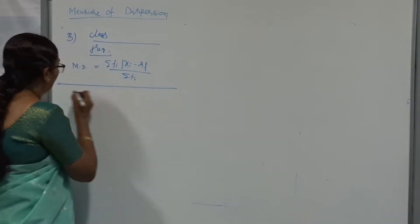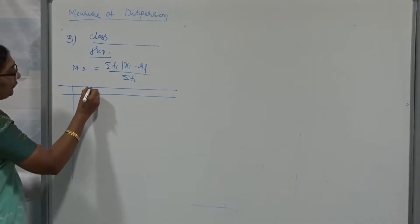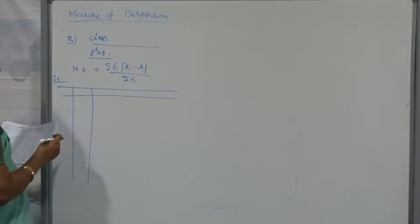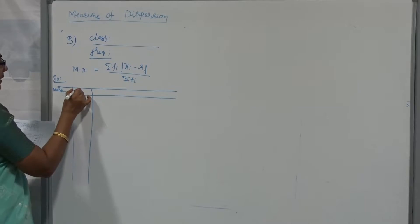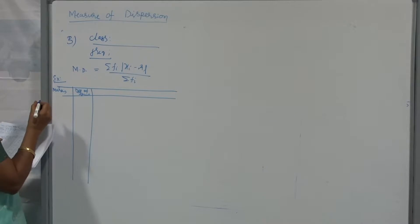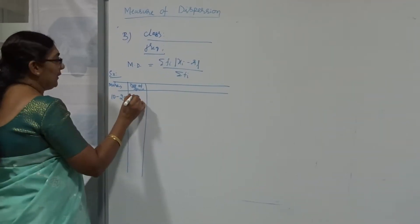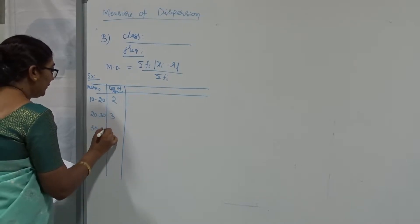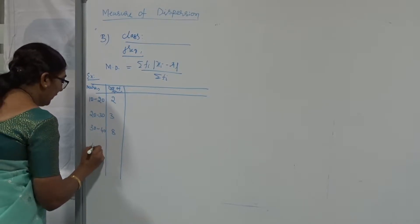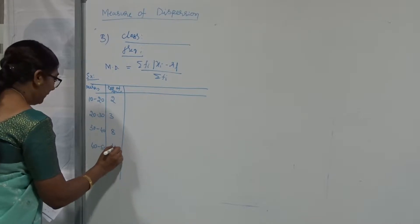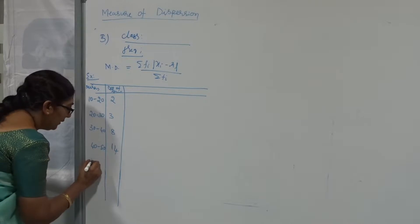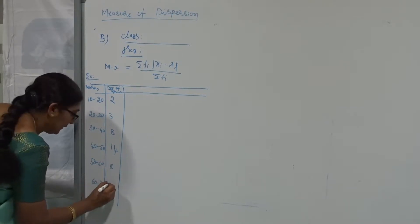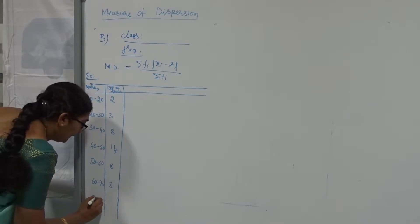Suppose given data is in the form of inclusive classes, first convert it to exclusive form. Now I am going to take one example directly. The first column is marks, the second is number of students. Marks: 10–20 with 2 students, 20–30 with 3 students, 30–40 with 8 students, 60–70 with 9 students, 70–80 with 2 students.